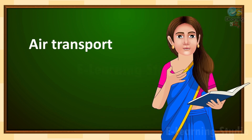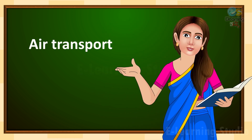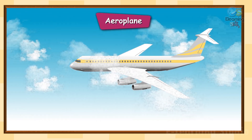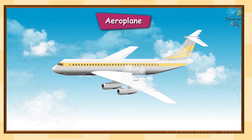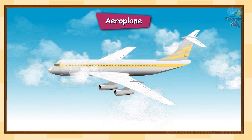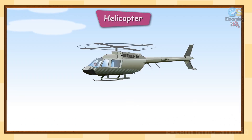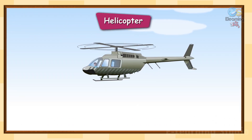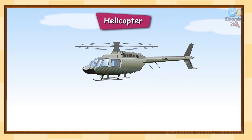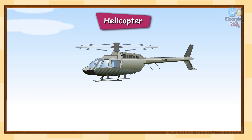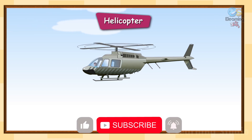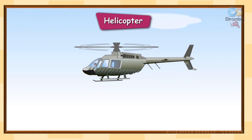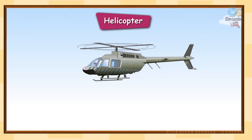Aeroplane: an aeroplane moves through the air with its wings and engine. Helicopter: a helicopter is an aircraft. It has wings called blades that help the helicopter to fly.